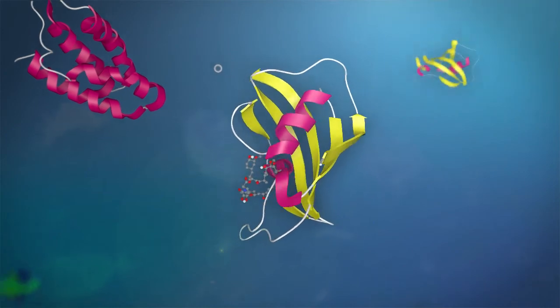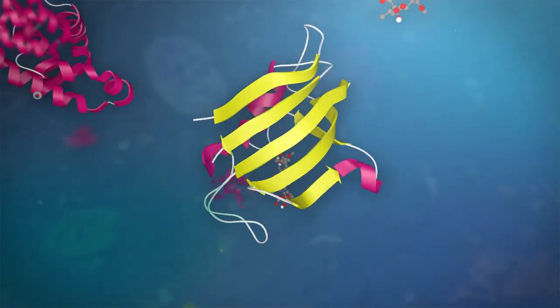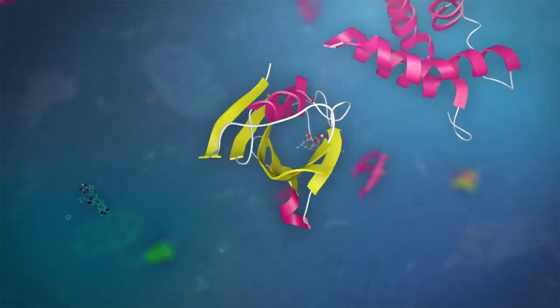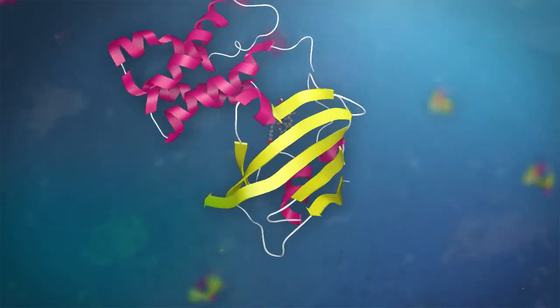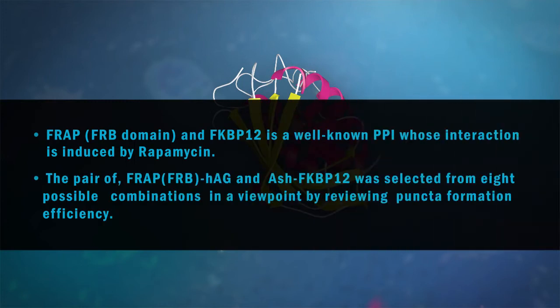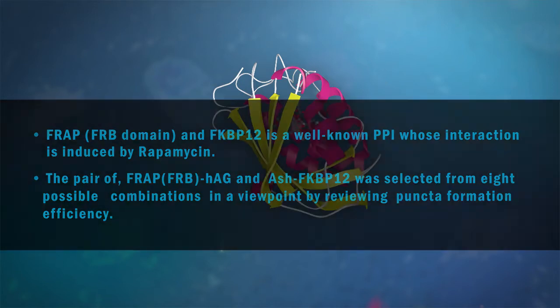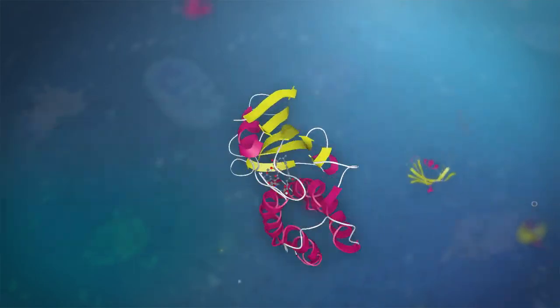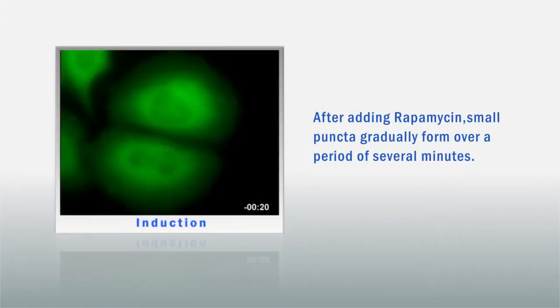MTOR-FRB domain and FK-BP12 is a well-known PPI whose interaction is induced by rapamycin. The pair of MTOR-FRB-FP and ASH-FK-BP12 was selected from eight possible combinations by reviewing puncta formation efficiency. After adding rapamycin, small puncta gradually form over a period of several minutes.